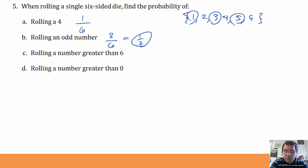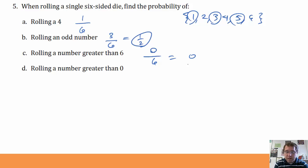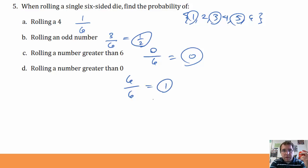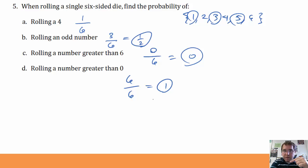What's the probability of rolling a number greater than 6? Looking at my sample space {1, 2, 3, 4, 5, 6}, none of those are greater than 6, so 0 divided by 6 equals 0. The probability of rolling a number greater than 6 is 0. What's the probability of rolling a number greater than 0? All 6 elements are greater than 0, so 6 divided by 6 equals 1. Probabilities have to be between 0 and 1, including 0 or 1. I cannot have a probability less than 0 or greater than 1, because the numerator cannot be bigger than the denominator.